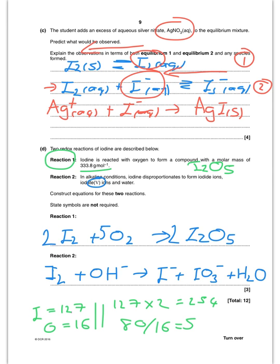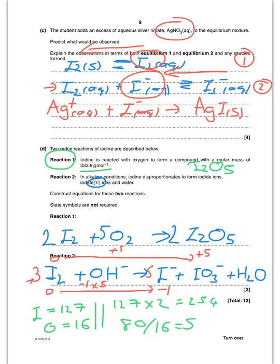Now comes the hard part: balancing. Iodine starts at oxidation state 0, going to iodide at −1 and iodate at +5. That's a change of −1 and +5 respectively. To balance oxidation states, multiply iodide by 5, giving a 5 coefficient there. To balance iodines, put a 3 on the I₂. Then balance oxygens: 3 oxygens in IO₃⁻ times the coefficient gives 6 oxygens, balanced by 3 OH⁻ on each side, giving 6 hydrogens on both sides.